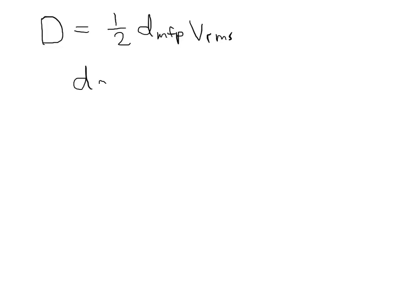So the mean free path, DMFP, if you recall, is going to be RT, where R is that ideal gas constant, divided by Avogadro's number n sub a, the pressure times pi times 2r quantity squared.